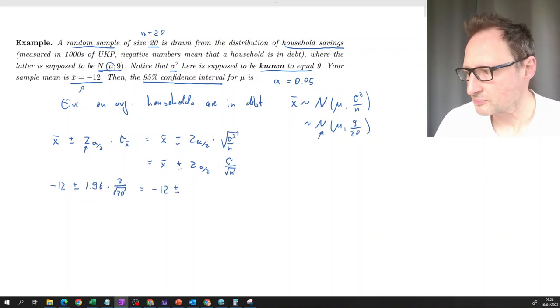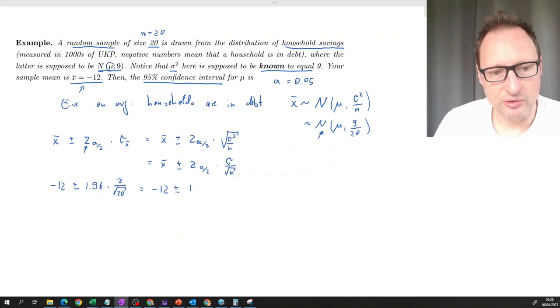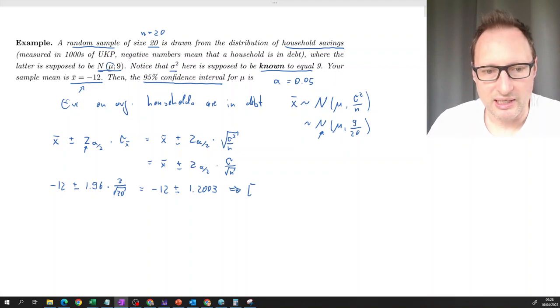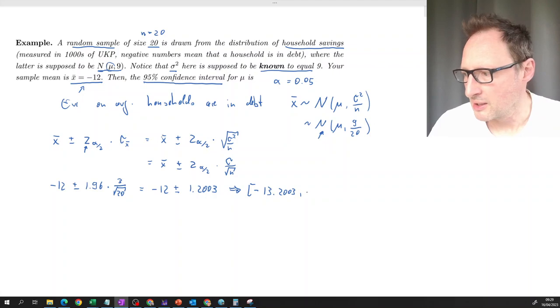And then sigma is going to be three divided by the square root of 20. So that is negative 12 plus minus once you calculate that 1.2003. And that then leads to the following confidence interval. So we get an interval that starts at negative, the lower bound is negative 13.2003, and the upper bound is negative 10.7997.